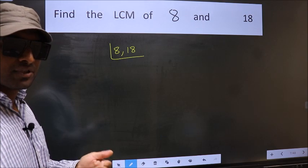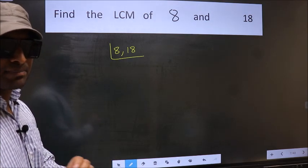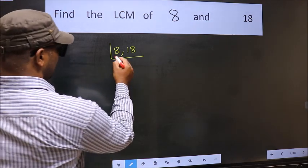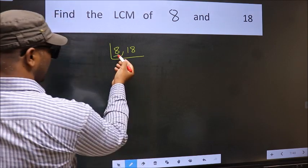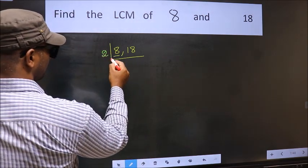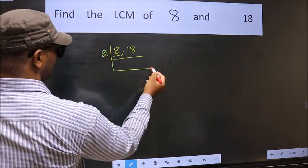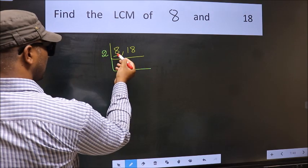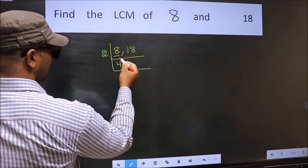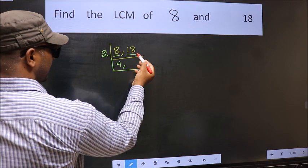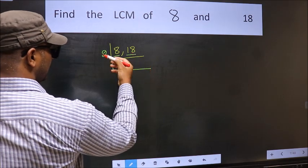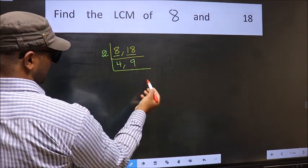Now focus on the first number, which is 8. 8 is even, so take 2. When do we get 8 in the 2 times table? 2 fours are 8. Now the other number 18 — when do we get 18 in the 2 times table? 2 nines are 18.